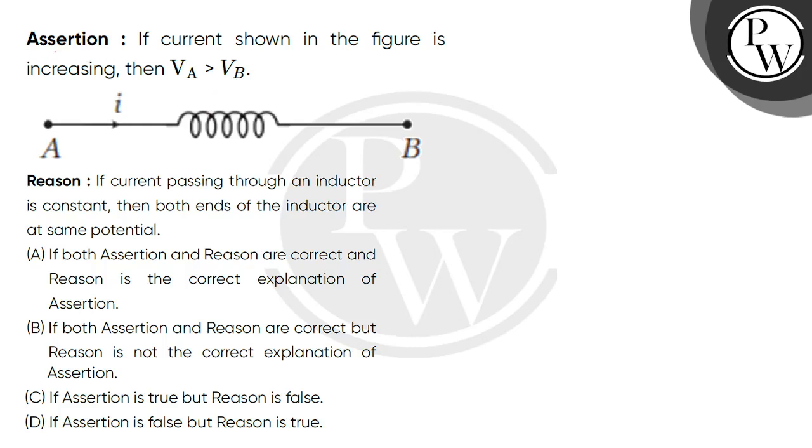Let's read the question. Present question, these statements - assertion and reason are based. So assertion has said if current shown in the figure is increasing, then VA more than VB.